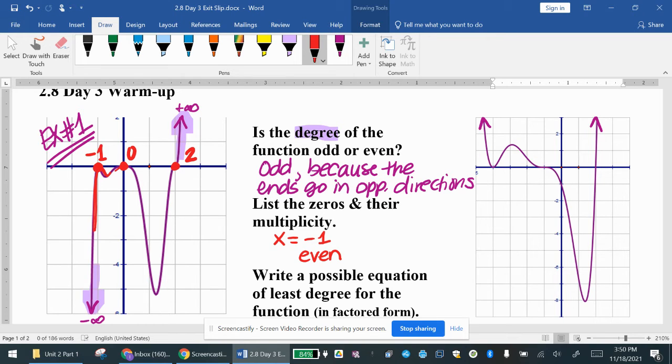Same with zero. The function goes up to zero, touches zero, but then it comes back down. So that one is also even. And last but not least, two. That one is odd because the function passes through it. The function actually goes through the value of two. I'm going to color code that. So this one for negative one is even because it touches and then bounces back.